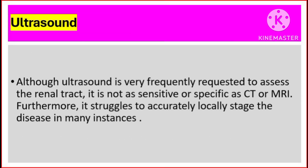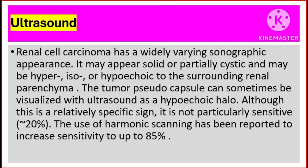Renal cell carcinoma on ultrasound. Although ultrasound is very frequently requested to assess the renal tract, it is not as sensitive or specific as CT or MRI. Furthermore, it struggles to accurately locally stage the disease in many instances. Renal cell carcinoma has a widely varying sonographic appearance. It may appear solid or partially cystic, and may be hyper-, iso-, or hypo-echoic to the surrounding renal parenchyma. The tumor pseudo-capsule can sometimes be visualized with ultrasound as a hypo-echoic halo. Although this is a relatively specific sign, it is not particularly sensitive, at about 20%. The use of harmonic scanning has been reported to increase sensitivity to up to 85%.